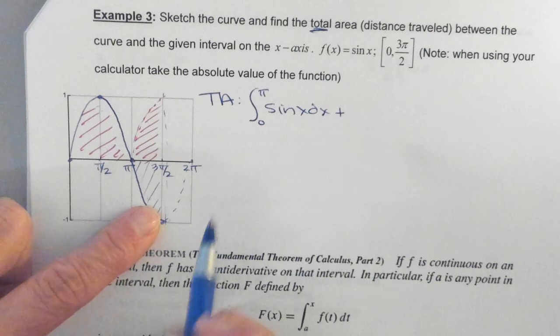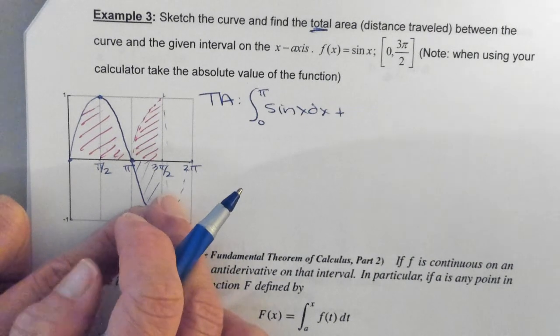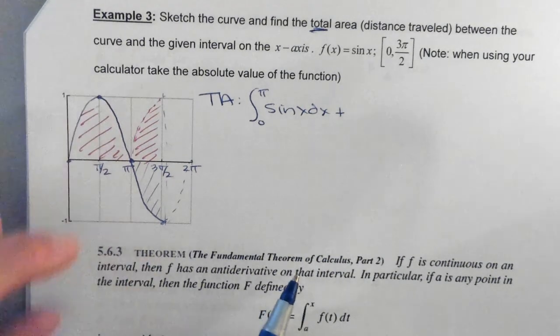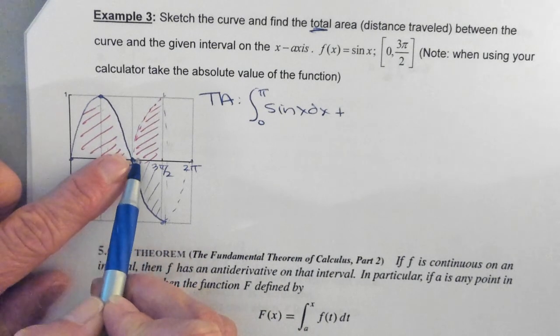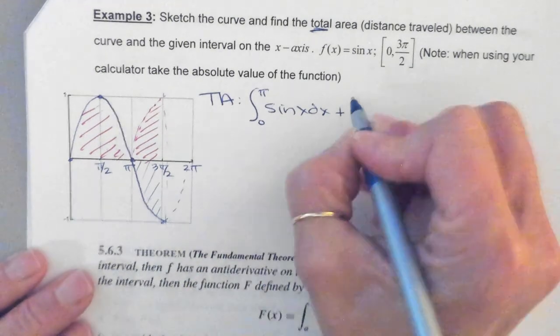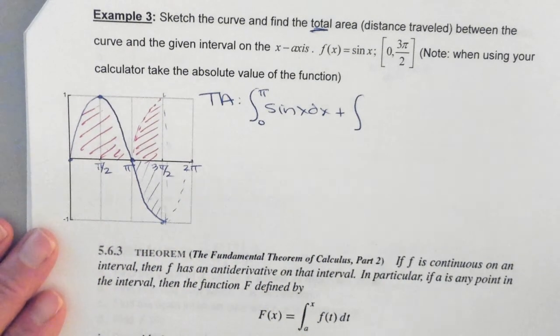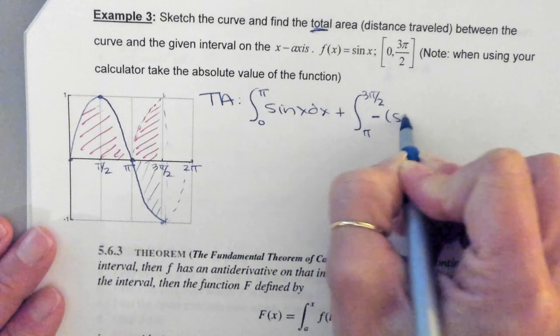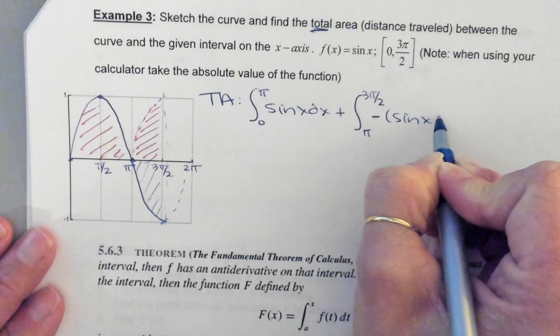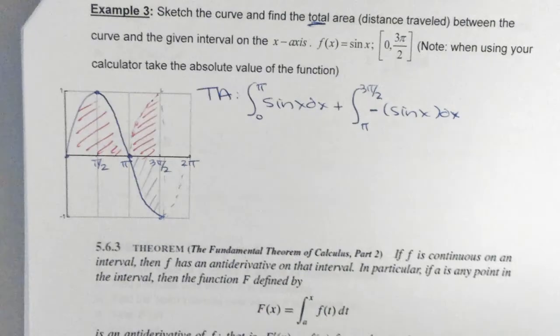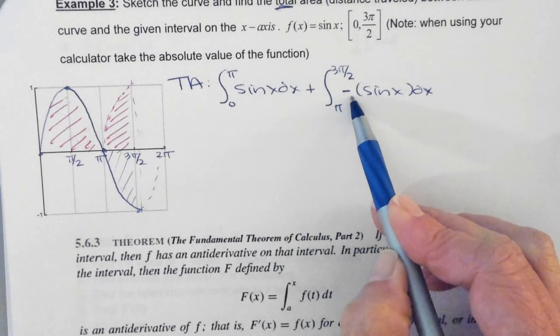Then it would be plus, because we're going to add these two areas together, but we want to negate, meaning take the opposite of this negative area. We know that the area is negative because the graph is below the x-axis. So when I negate it, I'm actually flipping it up here, but you're showing it algebraically. So then it's going to be the integral from π to 3π over 2, and I'm going to put the opposite of the sine of x dx here.